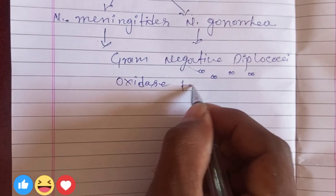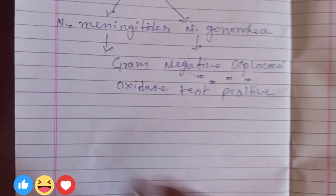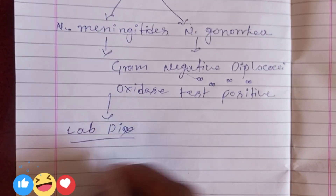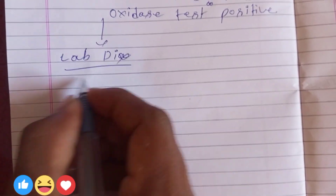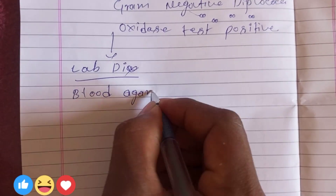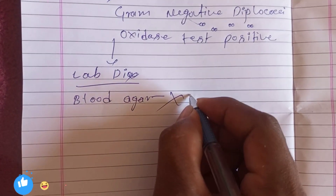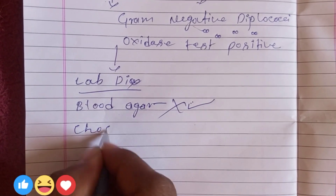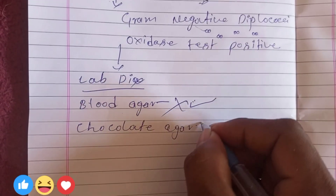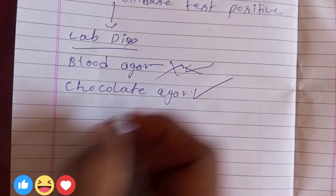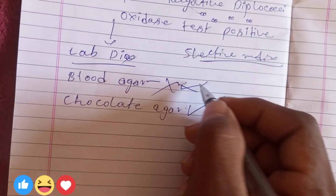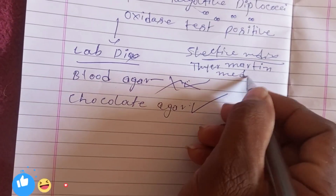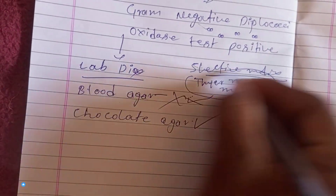Oxidase test: positive, negative. Negative improved conditions. Lab diagnosis — first place: blood culture, growth. Selective medium.